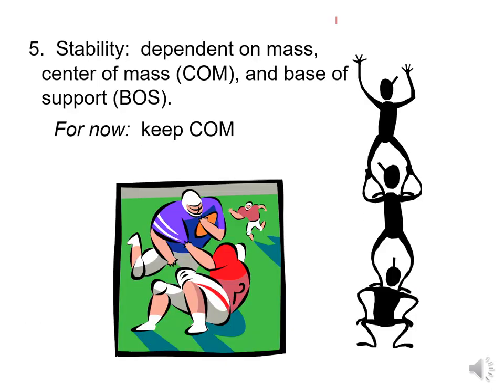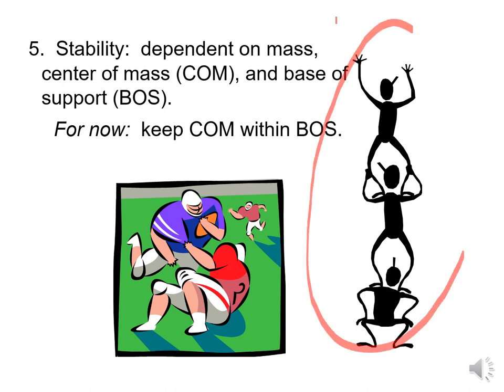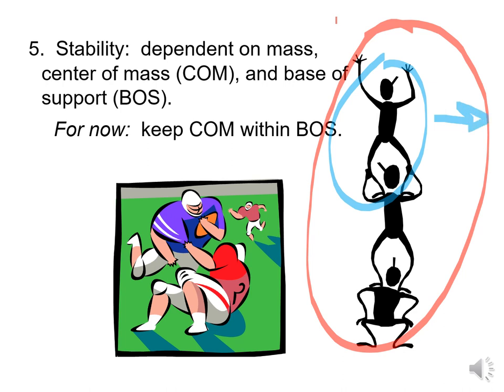One thing we're also concerned with is stability, which is dependent on mass — more specifically, the center of mass and the base of support. To maximize stability, we need to keep the center of mass within our base of support. Looking at people standing on each other's shoulders, they are all mostly vertical to each other and none deviating too far left or right. If one person leans too far to the side, the center of mass goes outside that base of support, and gravity will carry them and they'll all topple.